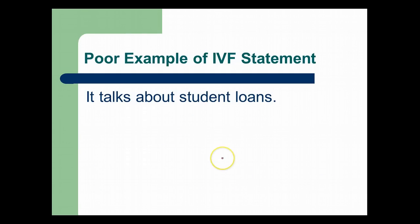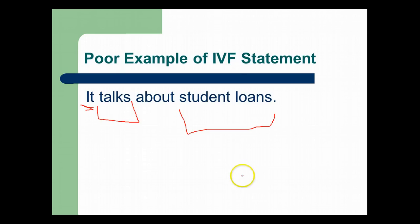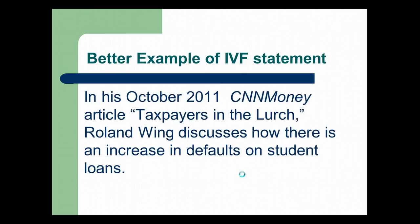Let's take a look at an example. Here's a poor example of an IVF statement: 'It talks about student loans.' Well, what is 'it'? And 'talks' is not really the best verb choice unless there's a person speaking. And 'student loans' — what about student loans? What does it say about student loans? Here's a better example: 'In his October 2011 CNN Money article, Taxpayers in the Lurch, Roland Wing discusses how there is an increase in defaults on student loans.'